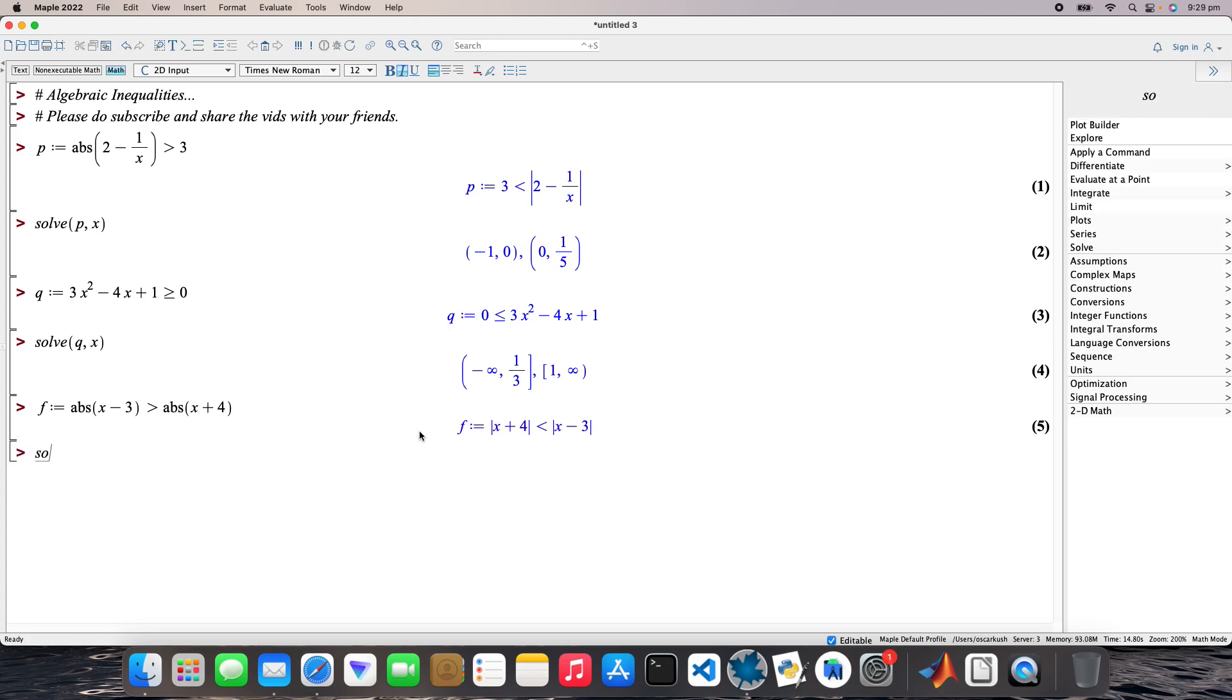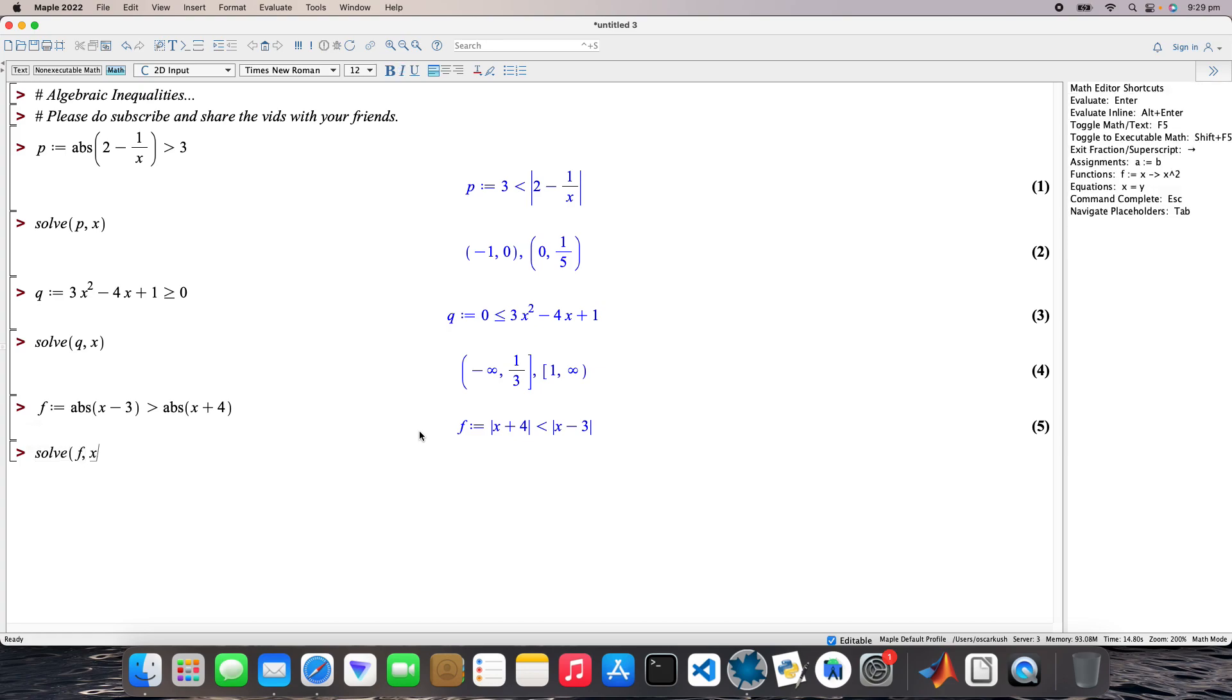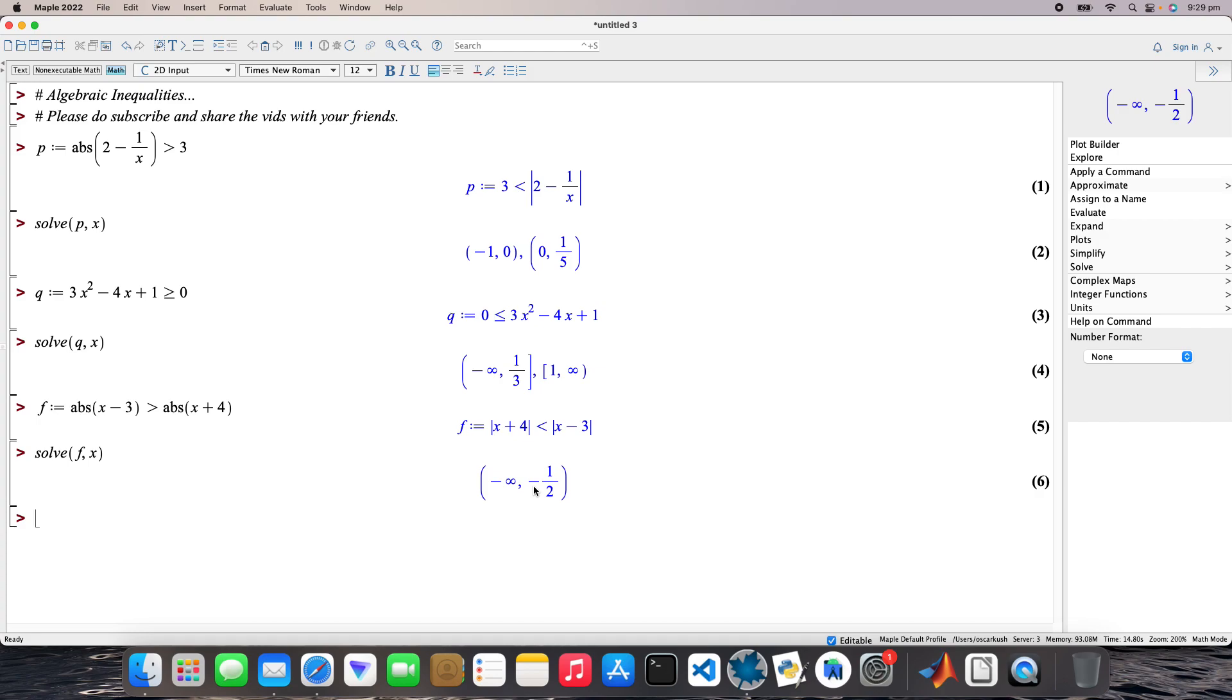Then solve that f for x. Minus infinity and minus a half. Minus infinity obviously is not a real number, no part of the solution. Likewise, minus a half is not part of the solution but the solution is closer to that side. I can also solve that inequality in a different way.